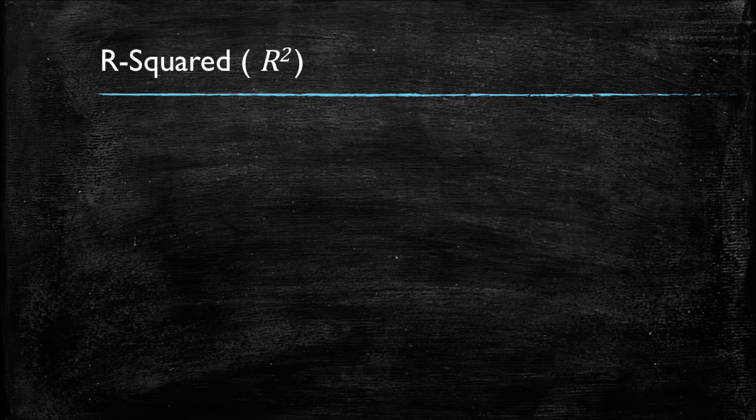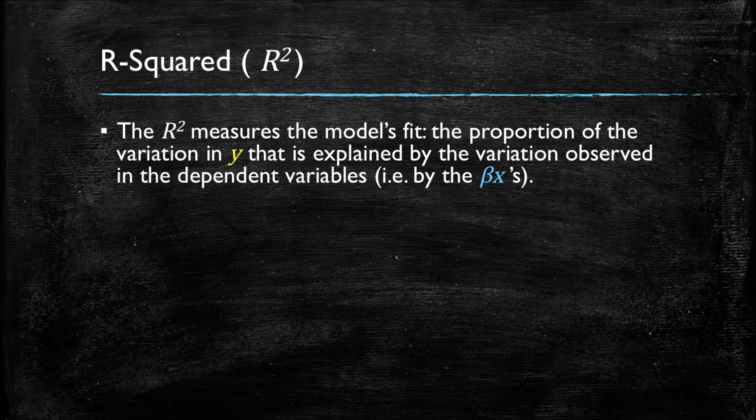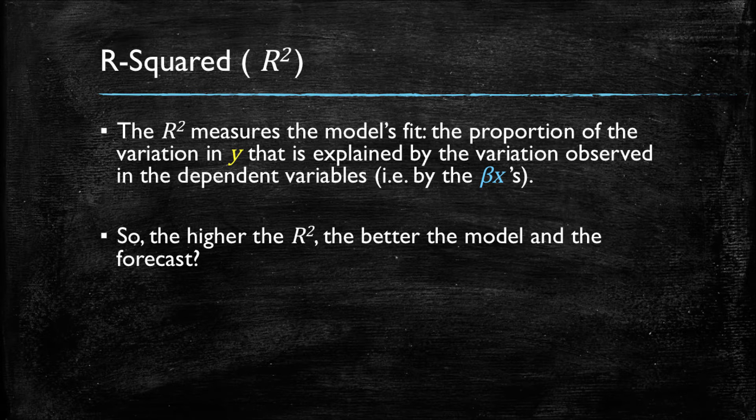An initial approach for this would be to focus on the r-squared. Let's remember that the r-squared is a measure of a model's fit, and it captures the proportion of the variation of the dependent variable that is explained by the variation of the observed dependent variables, which are the x's and their coefficients, the betas. In other words, we could assume that the higher the r-squared, the better our model will be in forecasting any unobserved values.